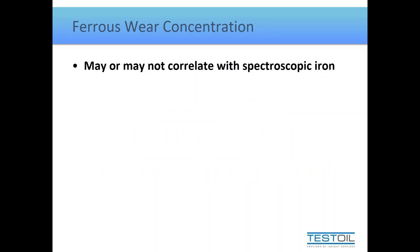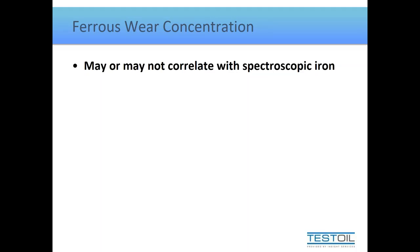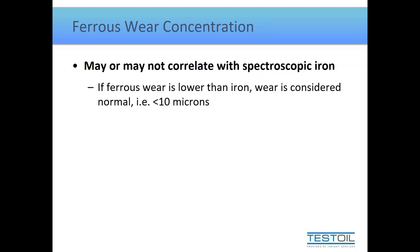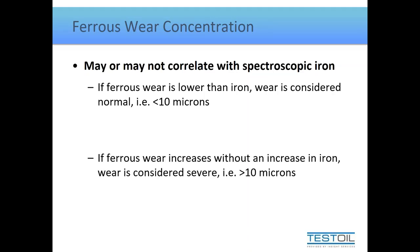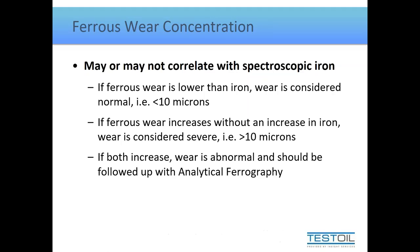We should always look at ferrous wear concentration as well. This test is not limited by particle size, but it only measures ferrous — iron — components. If ferrous wear concentration is low but spectroscopic iron is high, most wear is in the small category and is probably normal. If ferrous wear concentration is increasing but spectroscopic iron isn't changing, the wear is likely more severe — particles larger than ten microns. If both go up together, we definitely have an abnormal wear mechanism and should follow up with analytical ferrography.